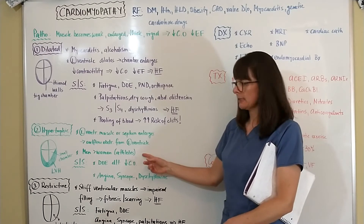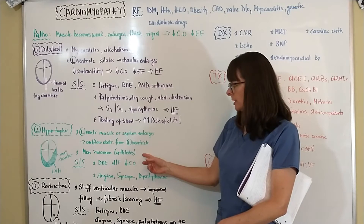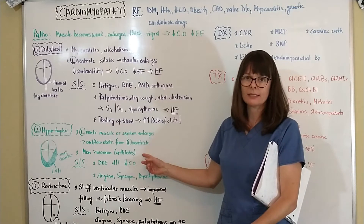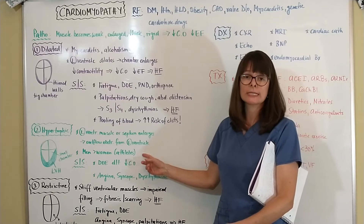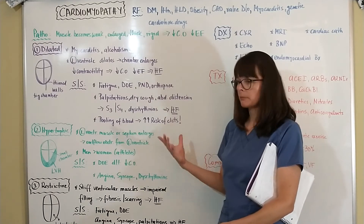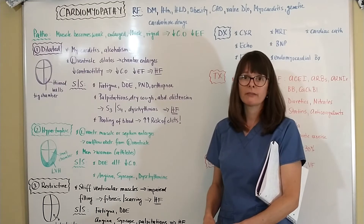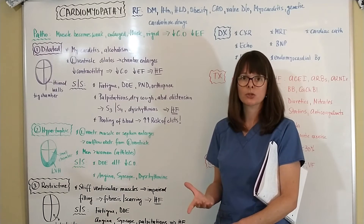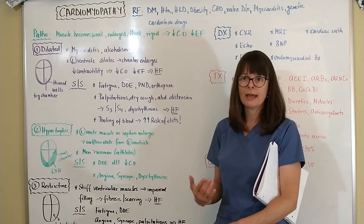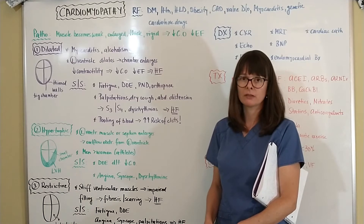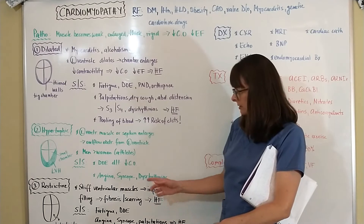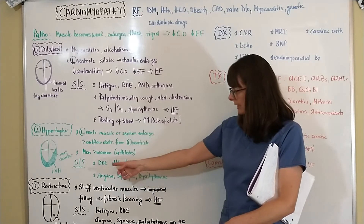Notably, men are more likely than women to develop hypertrophic cardiomyopathy. Unfortunately, it is the leading cause of sudden cardiac death in athletes, because many times it goes undetected — the patient may have an underlying issue never checked out, then they exert themselves in physical activities and suffer sudden cardiac arrest.